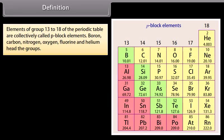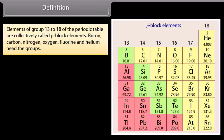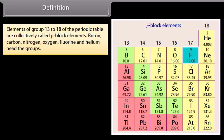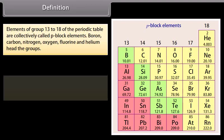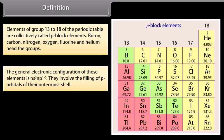Elements of groups 13 to 18 of the periodic table are collectively called P-block elements. Boron, carbon, nitrogen, oxygen, fluorine and helium head the groups. The general electronic configuration of these elements is NS2, NP1 to 6. They involve the filling of P-orbitals of their outermost shell.